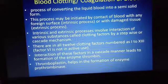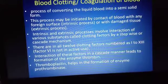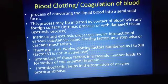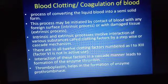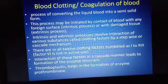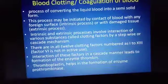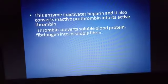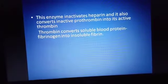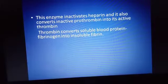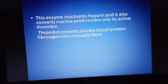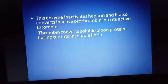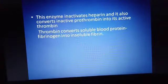Thrombin is formed by the action of thromboplastin. Thromboplastin helps in the formation of the enzyme prothrombinase. This enzyme prothrombinase inactivates heparin and converts the inactive prothrombin into active thrombin.